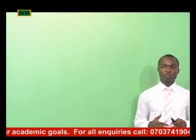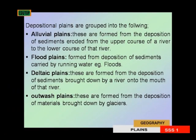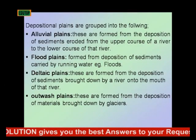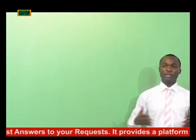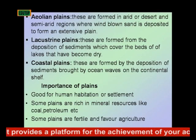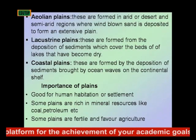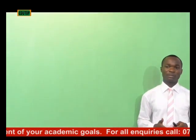The delta plane is formed from the deposition of sediments that are brought down from a river onto the mouth of that river. Outwash planes are formed from the deposition of materials that are brought down by glaciers. Aeolian planes are formed in arid, desert, or semi-arid regions where wind blows, carrying sand that is deposited to form extensive planes.